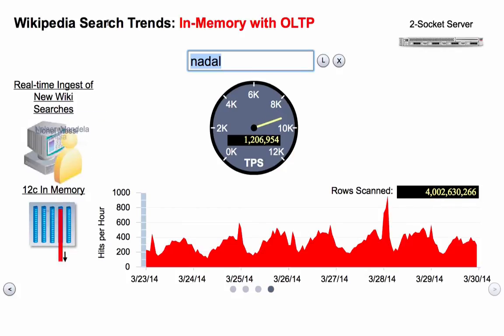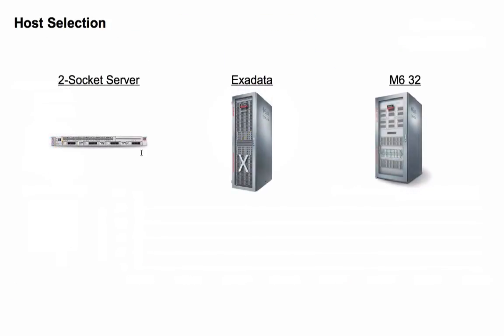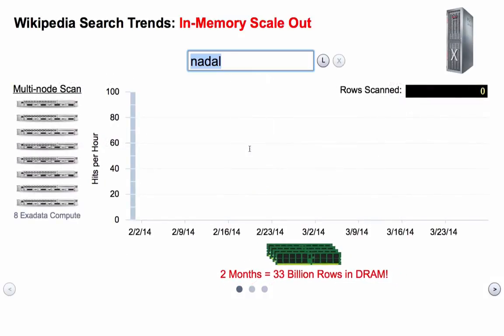Those are the demos on a two-socket server. Now let's move to a much bigger system. I'm going to show you scale-out on a much bigger server. We have an Exadata machine with eight compute nodes, and I'm going to show you how the in-memory column store works. Each of the eight nodes has one-eighth of the data on it — the data is spread to the memory of all the nodes in the cluster, and then we run a parallel query that fetches the data from each node and combines it.